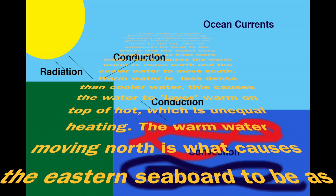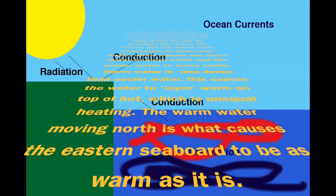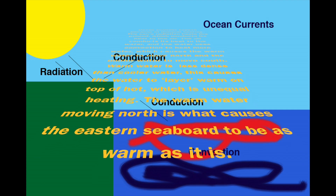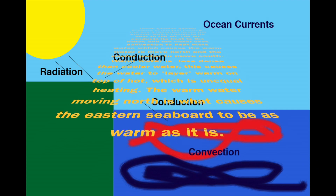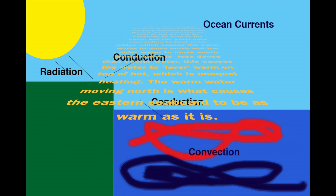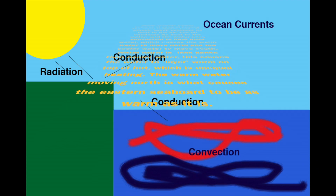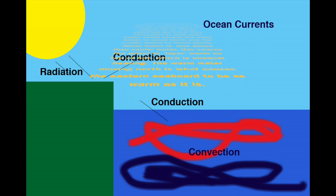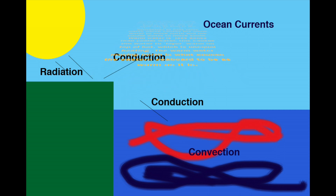Warm water is less dense than cooler water. This causes the water to layer warm on top, which is unequal heating. The warm water moving north is what causes the eastern seaboard to be as warm as it is.